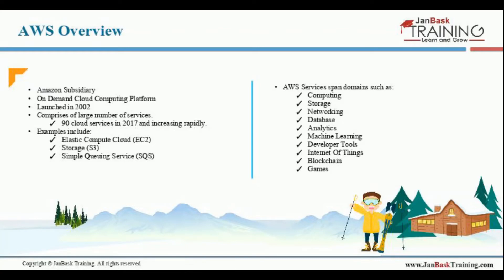Some examples of services provided by AWS are the Elastic Compute Cloud, abbreviated as EC2, the storage platform S3, Simple Queue Service (SQS), and many more. We will look at the full list of these services when we do the actual demo.